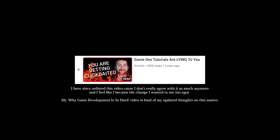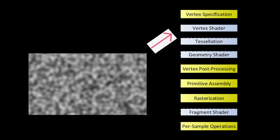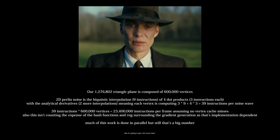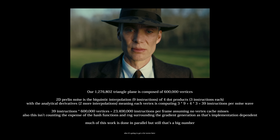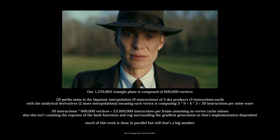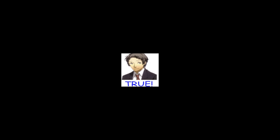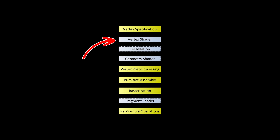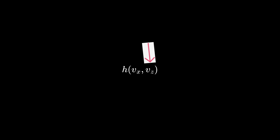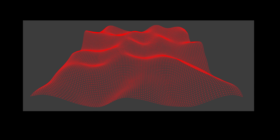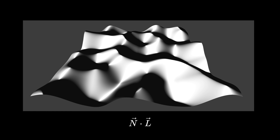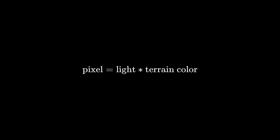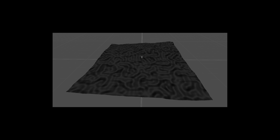"But Acerola! In your video criticizing game development tutorials, you said calculating Perlin noise in a vertex shader of a mesh is like the absolute worst thing you could possibly do!" In the vertex shader, we pass the X and Z positions of our vertex into the height function and adjust the vertical position of the vertex. For basic lighting, we'll use the Lambertian diffuse as always. Lastly, we can multiply the light value with a dirt color to make it look more like terrain.